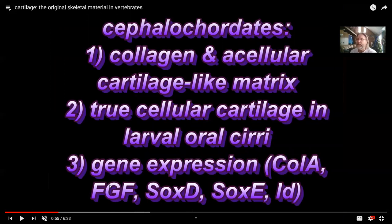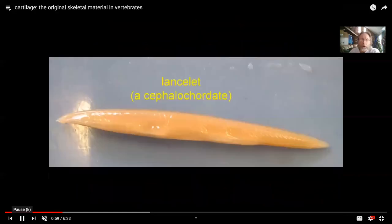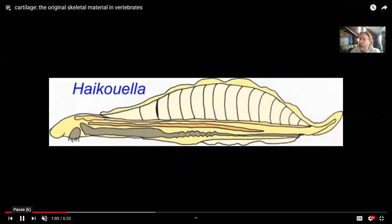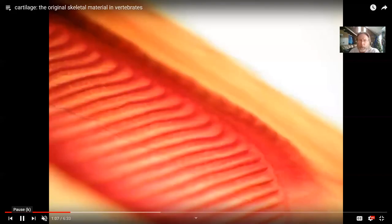By the time you get to the cephalochordates, which are true chordates like lancelets, their cartilage is more similar to vertebrate cartilage than that of mollusks or arthropods. So cartilage became more similar to vertebrate cartilage over time, having a homologous tissue originating in a common ancestor of mollusks, annelids, brachiopods, and vertebrates. As we get closer to vertebrate ancestry, the cartilage gets more similar.